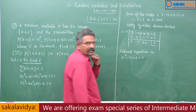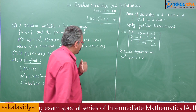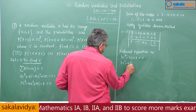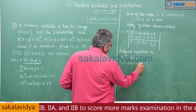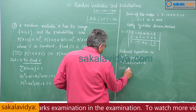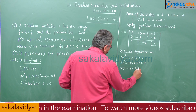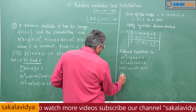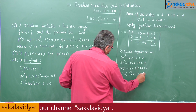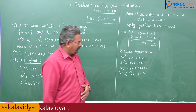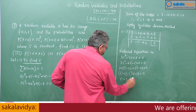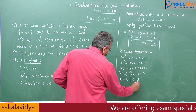We get a quadratic equation. Splitting the middle term: 3c squared minus 6c minus c plus 2 equals 0. Taking 3c common from the first pair and minus 1 from the second: 3c(c minus 2) minus 1(c minus 2) equals 0, giving (c minus 2)(3c minus 1) equals 0. So c equals 2 or c equals 1/3.